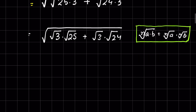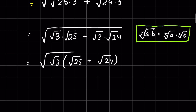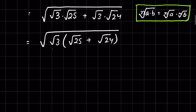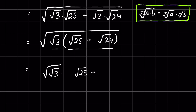Now we can take √3 as a common factor and write √3 times (√25 + √24), all under a square root. This expression is again in the form of a×b under a square root, so we can write √(√3) times √(√25 + √24).